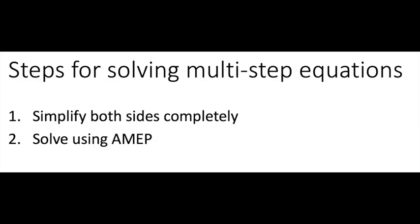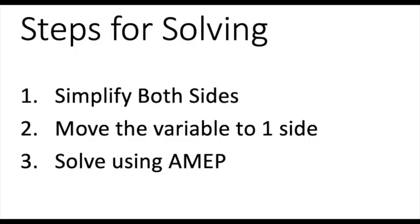Last lesson we learned that the steps for solving multi-step equations were to simplify both sides completely and to solve using AMEP. In this lesson we're going to learn about one extra step that might be necessary. In the event that there are variables on both sides of the equation we may need to add a step between simplifying and solving where we move the variable to one side of the equation.